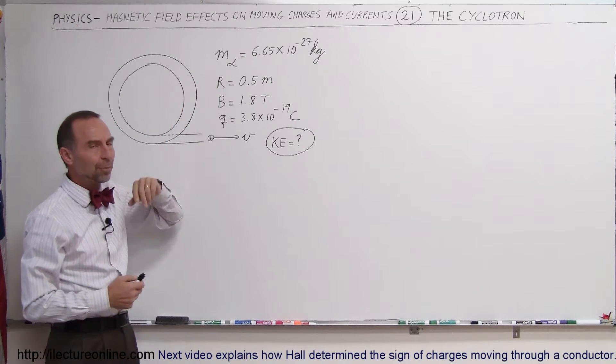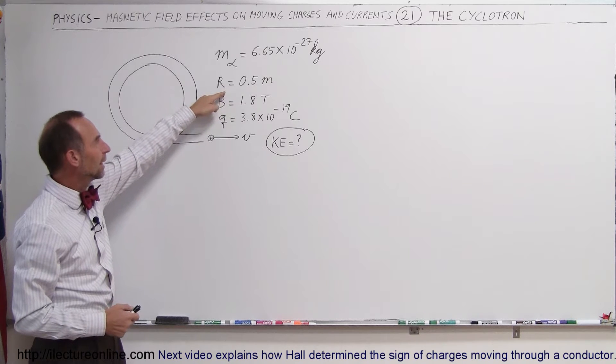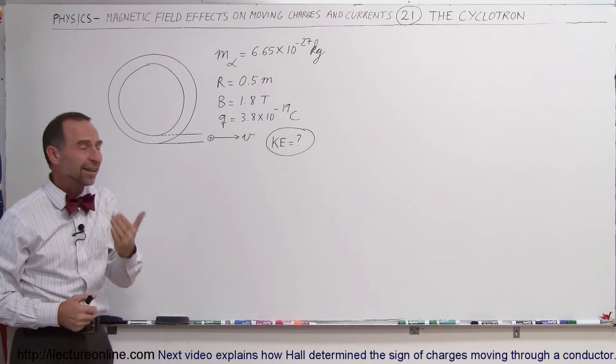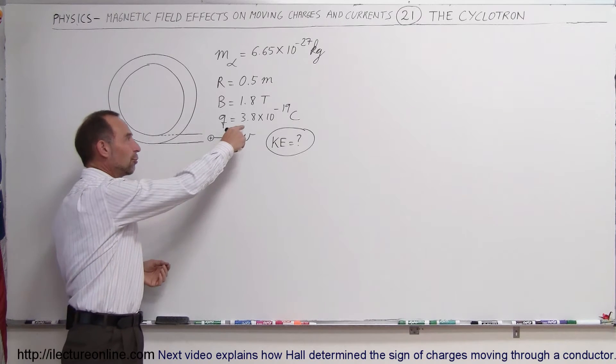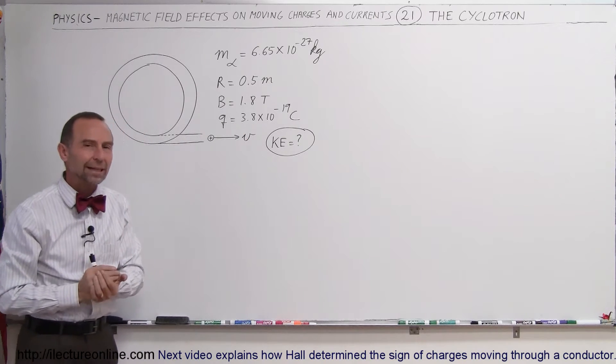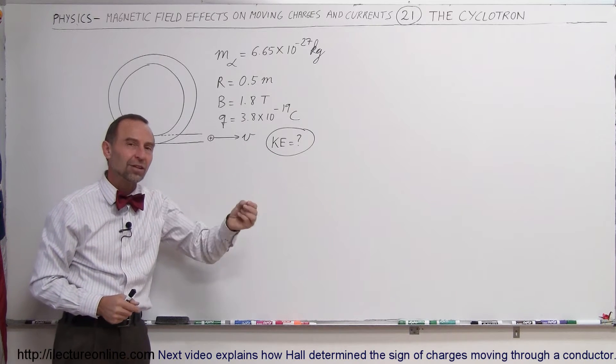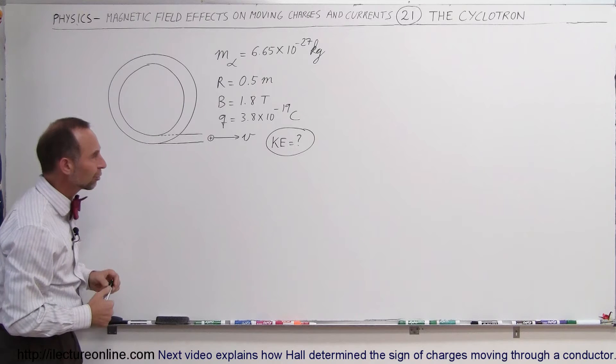if we're taking alpha particles, moving them around in a radius of 0.5 meters with a magnetic field at 1.8 teslas and a charge of two protons which is 3.8 times 10 to the minus 19 coulombs, what will be the velocity and the kinetic energy of those particles as they become ejected out of that cyclotron?